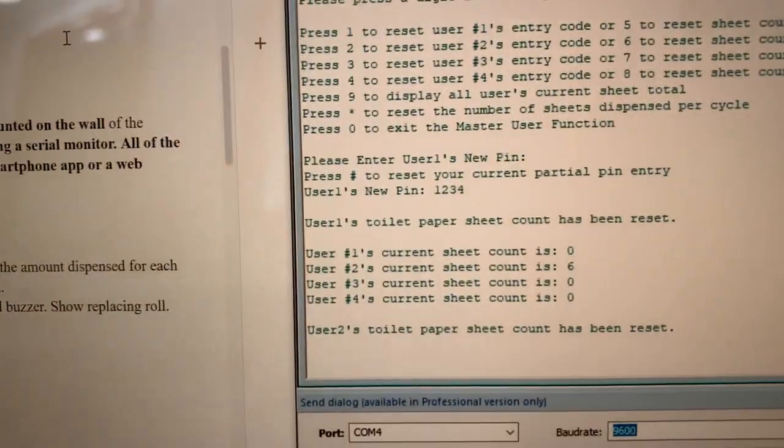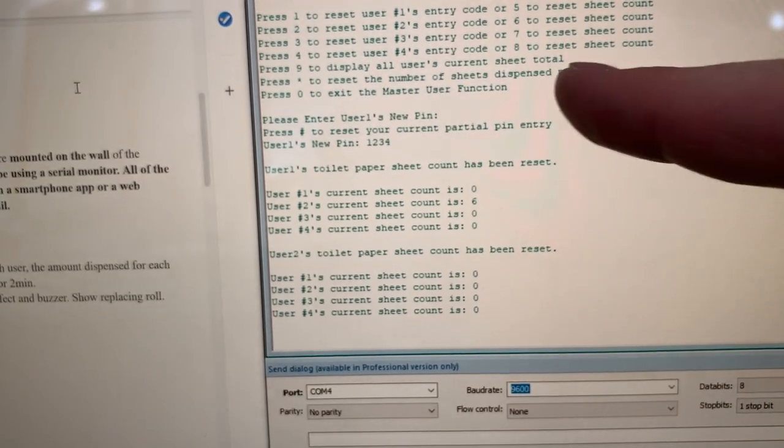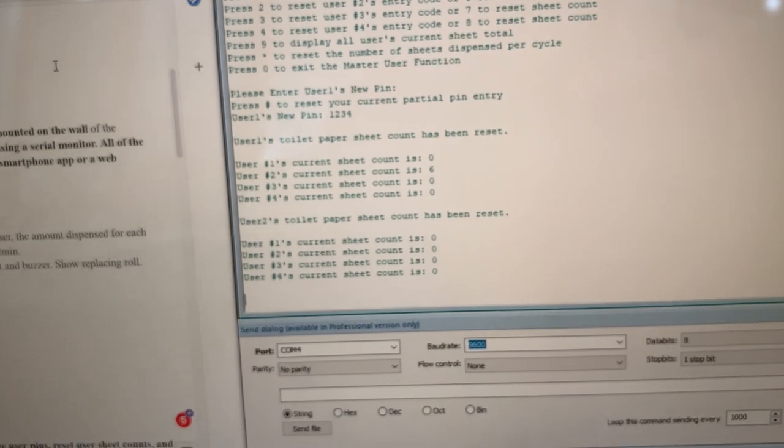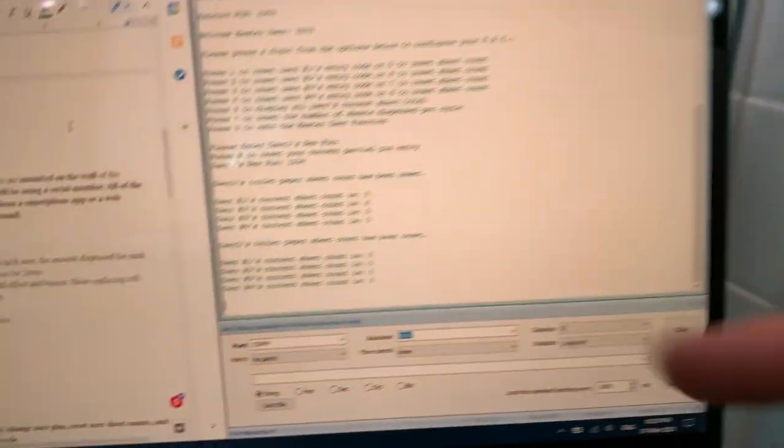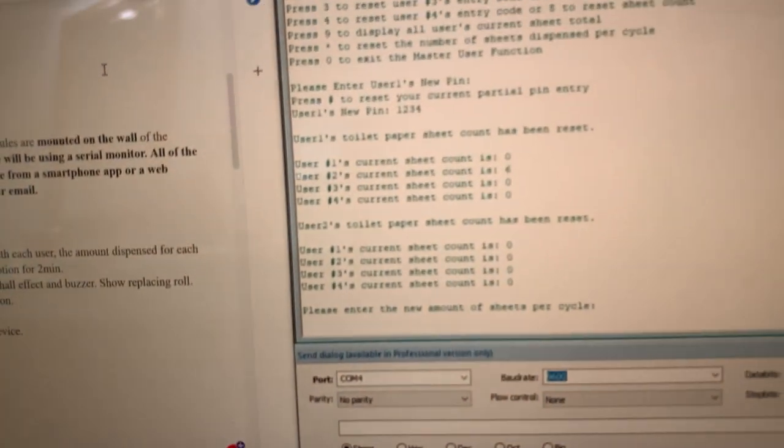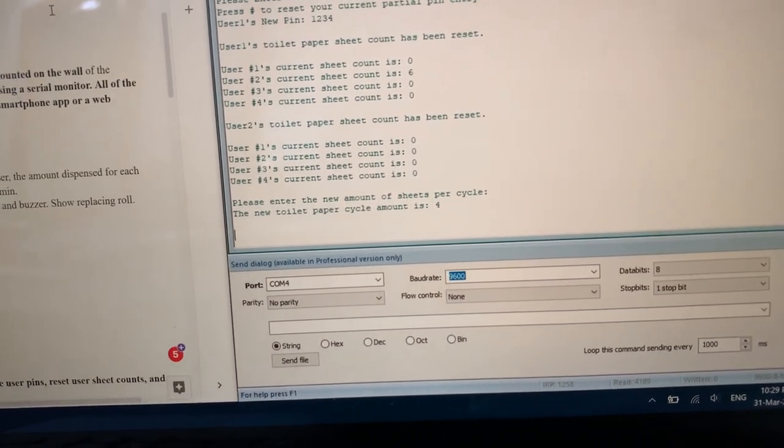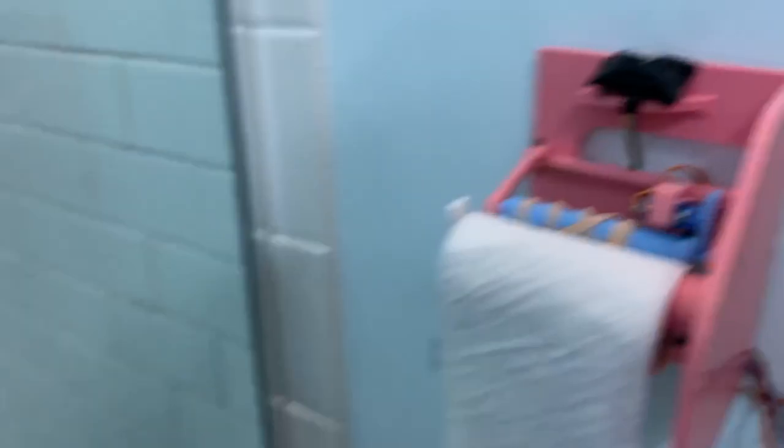So now if we reset user two, which is the six key, and then click nine again, it will all be cleared. And then we can, the star resets the number of sheets per cycle or sets it. So I can change it. Instead of six sheets dispensed per cycle, let's change it to four. So that would be the star key, star four, now set to four. Let's exit the master function with zero.